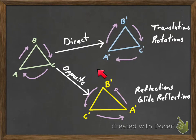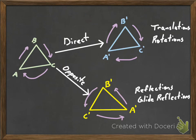But if it's an opposite isometry, like a reflection or a glide reflection, the order of the points flips. A way to remember that is if you look in the mirror and you have letters on your shirt, the letters flip — so it's a reflection. So if the order of the points flip around — like here it's going counterclockwise — then you notice some sort of reflection.